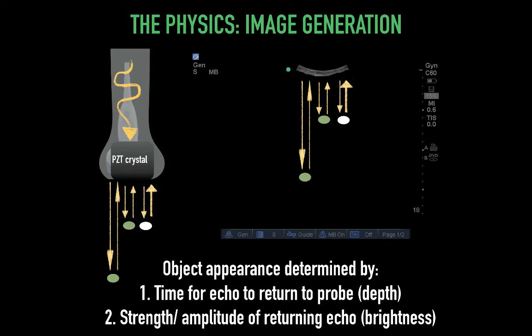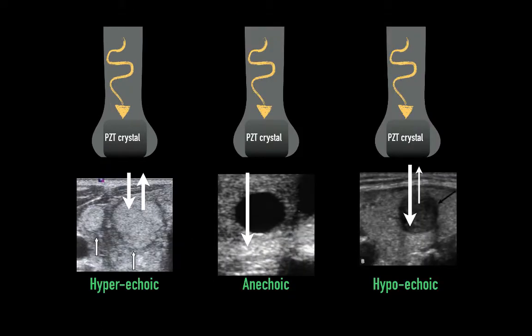Waves reflected fully and directly back to the transducer yield the highest amplitude and greatest signal. The strength of the signal in B-mode is determined by amplitude — the highest amplitude signals get the brightest dots. Sound waves that undergo much attenuation are reflected back with lower amplitudes, resulting in less bright signals. This brings us to our next principle: echogenicity.